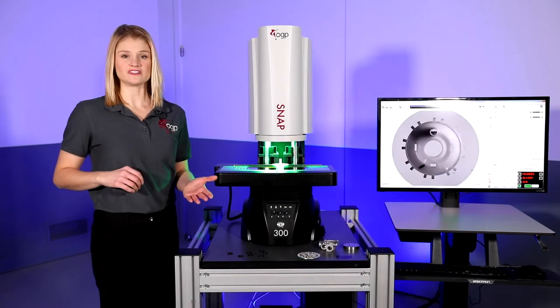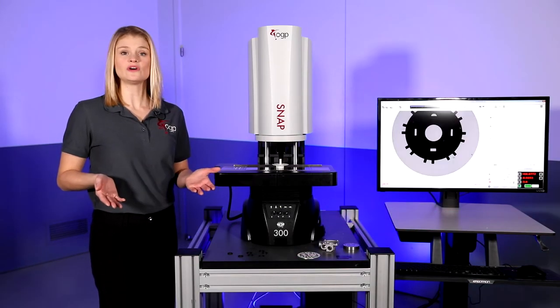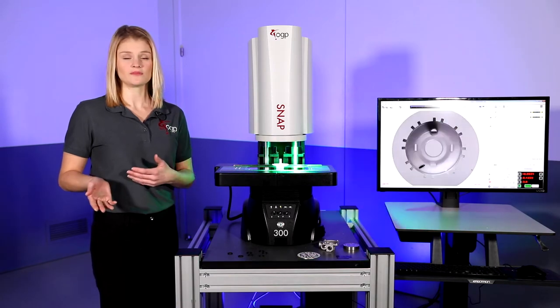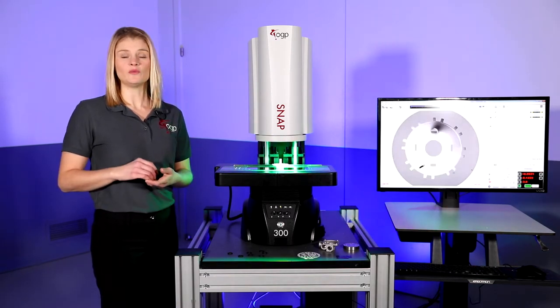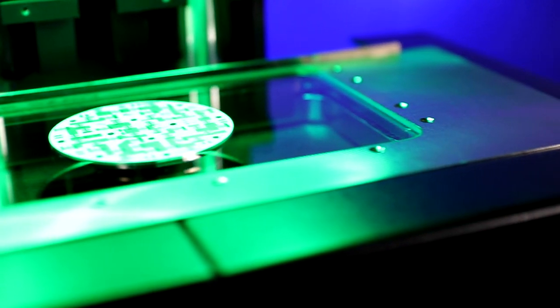SNAP measurement systems are designed to measure anywhere from the shop floor to the lab or as part of an automated work cell. Rugged construction in an open work envelope makes SNAP easy to implement in virtually any manufacturing setting.